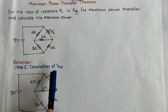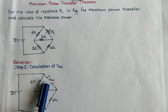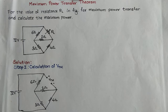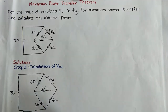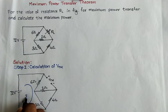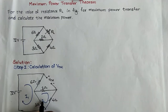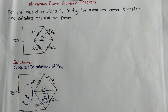Step one is calculation of VTH. We have removed RL from the circuit and here we have to calculate VTH. To calculate VTH, you can use any known law to solve the problem. I will use mesh analysis here. Let the current in the first mesh be I1 and the current in the second mesh be I2. I need to find I1 and I2 to calculate VTH.